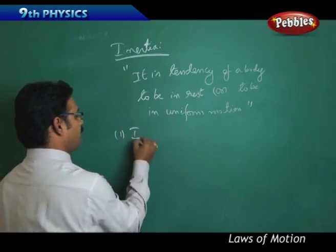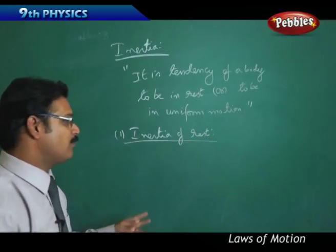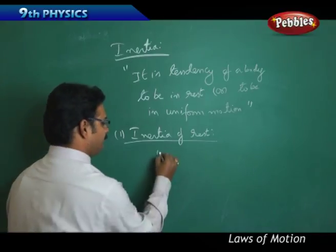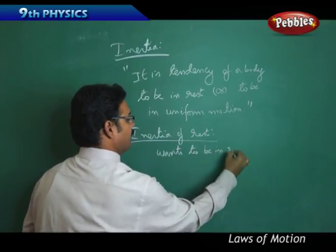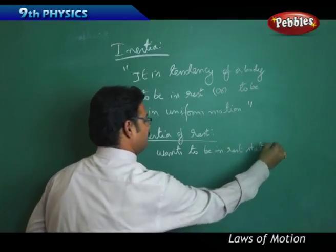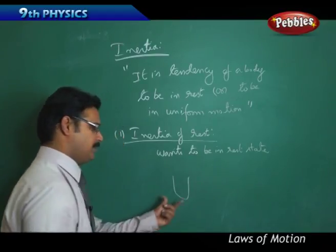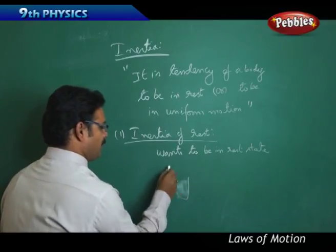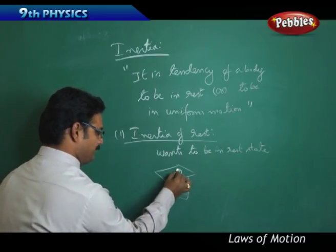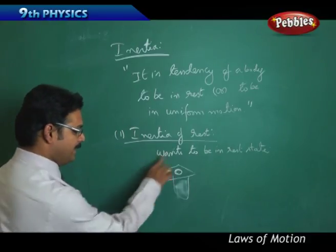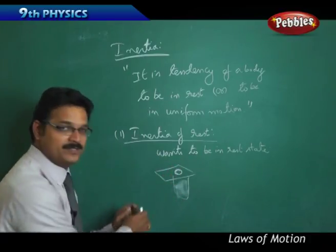Now we understand there are two types of inertia. Number one: inertia of rest, which means the body wants to be in rest. Take an example — take a glass tumbler filled with water, place a cardboard on top of it, and place a coin on the cardboard. The whole system is at rest.